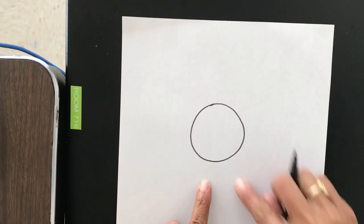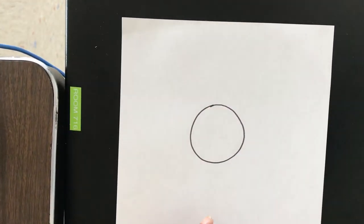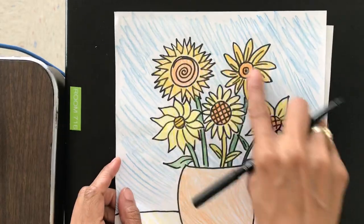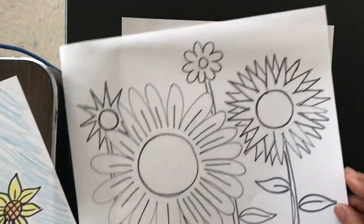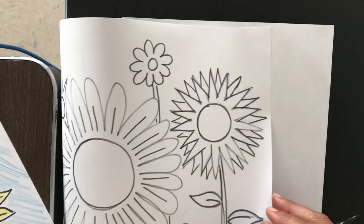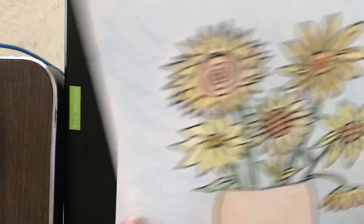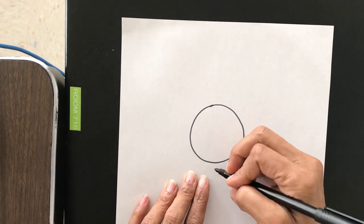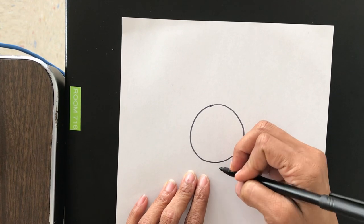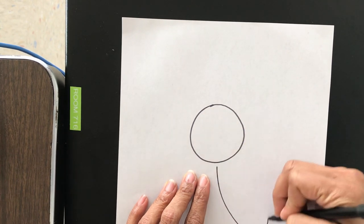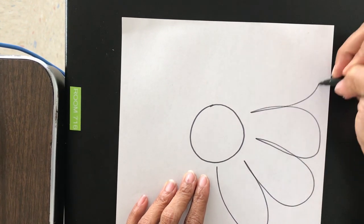Next, I'm going to draw my petals of my sunflower. And as you can see, guys, there are so many ways that you can draw your sunflower petals. It's all about how you want to do it. I'm going to draw my sunflower petals kind of pointy round. Everybody see that?